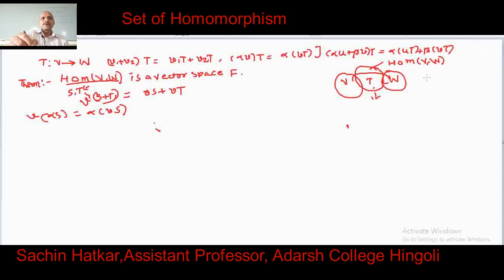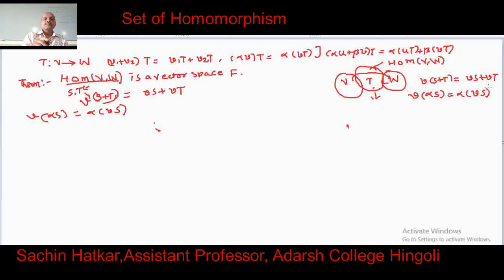To write separately: S + T of V equals S(V) + T(V), and αS of V equals α times S(V). Now we show that all the conditions of homomorphism are satisfied. First we show that S + T is also a homomorphism. A homomorphism satisfies T(V₁ + V₂) = T(V₁) + T(V₂) and T(αV) = α·T(V).